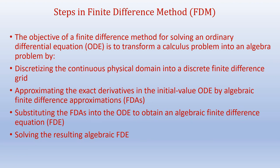The typical steps involved in solving an ODE using finite difference method are: approximating the exact derivatives in the ODE by algebraic finite difference expressions; substituting the finite difference approximations into the ODE to obtain an algebraic finite difference equation, or FDE; and then solving the resulting algebraic FDE. These are the four typical steps involved in solving an ODE using finite difference method.